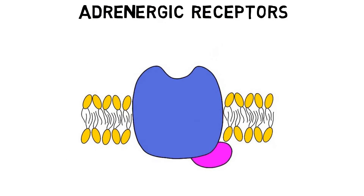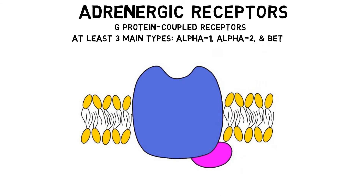Norepinephrine acts on G-protein coupled receptors referred to as adrenergic receptors or adrenoceptors. There are thought to be at least three main types of adrenergic receptors: alpha-1, alpha-2, and beta-adrenergic receptors, each of which has multiple subtypes.